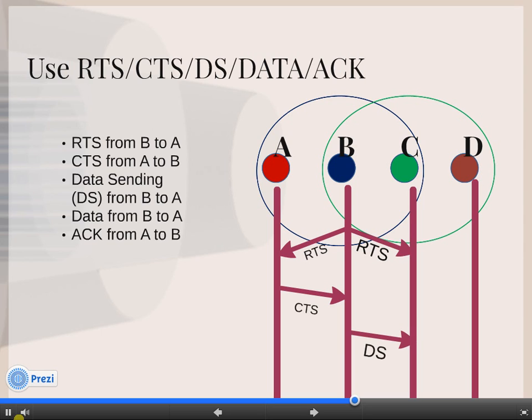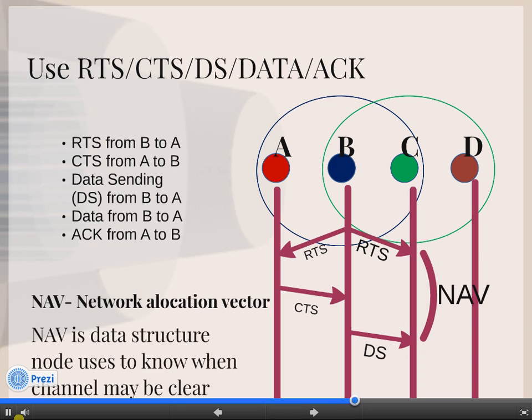This timer is known as NAV, i.e., Network Allocation Vector. NAV is a data structure a node uses to know whether the channel is clear or not. DS could be used to wait for a short duration. Hence, in case no DS is received, then C will not wait and will send RTS to node D.